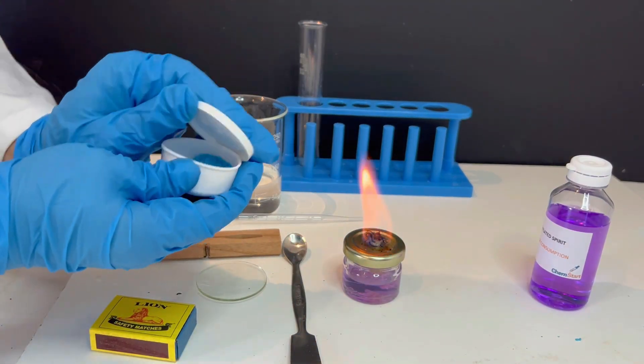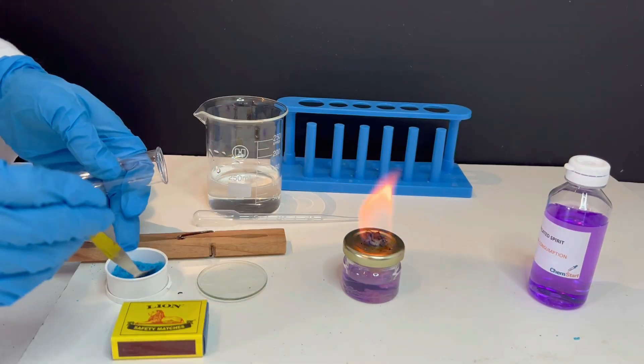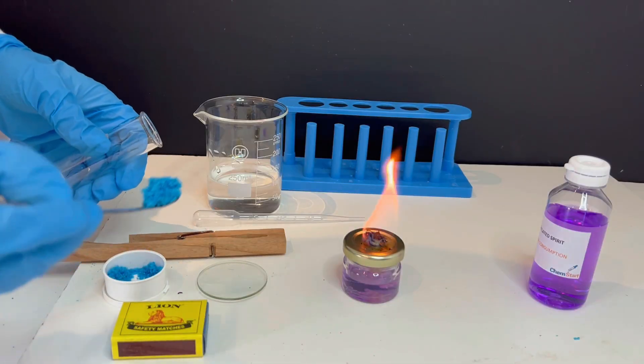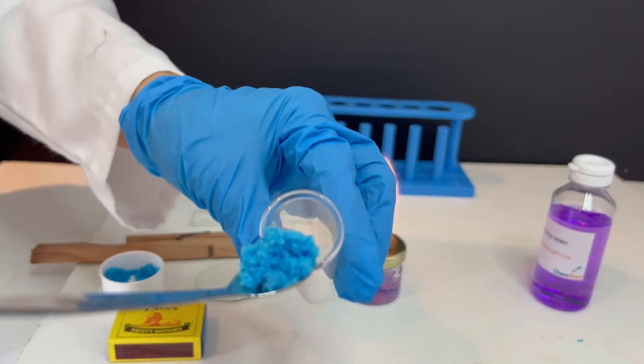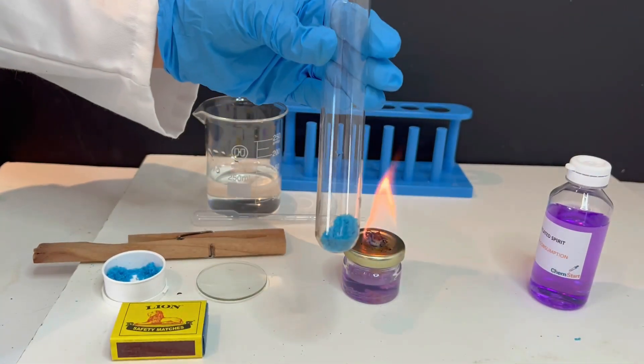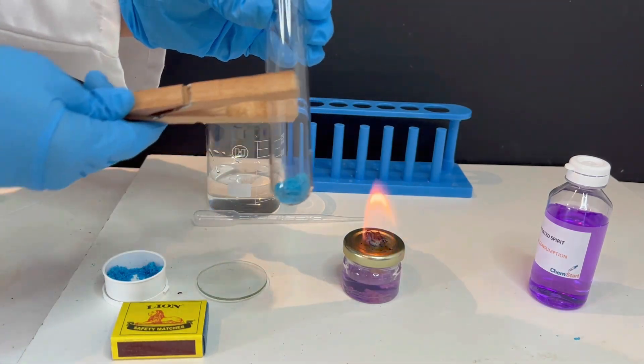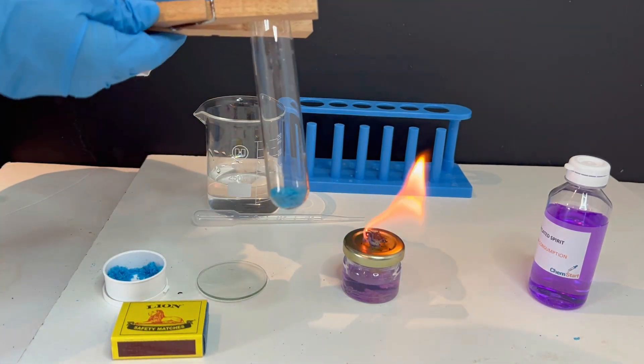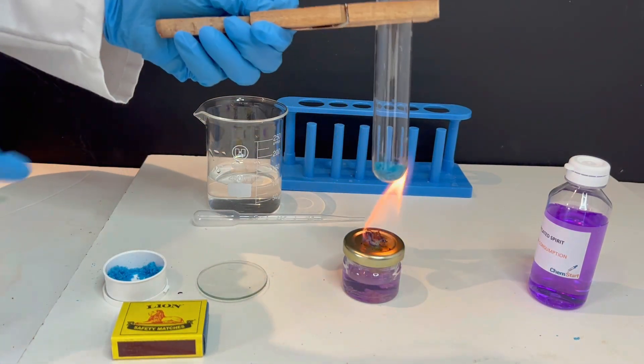Now I will place a small amount of hydrated copper sulfate into a test tube using the spatula. It's important that you carefully transfer the blue crystals into the test tube.